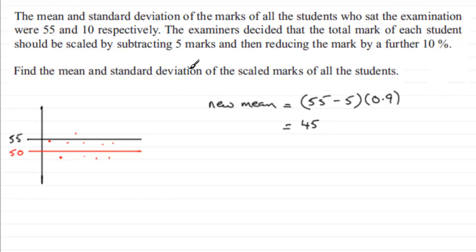Now we've also got to work out what the new standard deviation is going to be. Now, when you take off 5 off your marks, the scattering of those points about the mean doesn't change. And remember, standard deviation is a measure of the scattering about the mean. So when you drop all the points by 5 marks, that scattering stays exactly the same. So we're not interested in that part. What we're interested in is this reducing by a further 10%, because when we scale these points now by 10%, they get closer to the mean. So the scattering is going to be smaller.